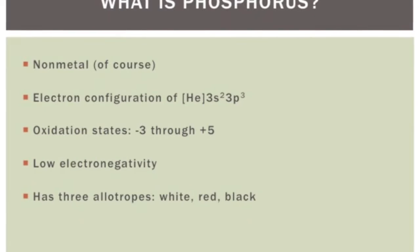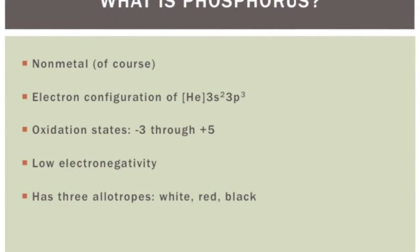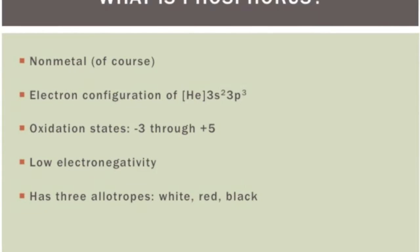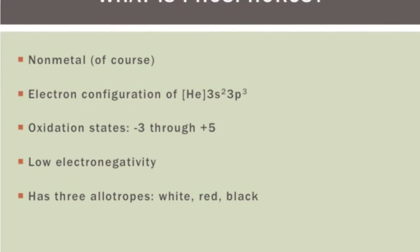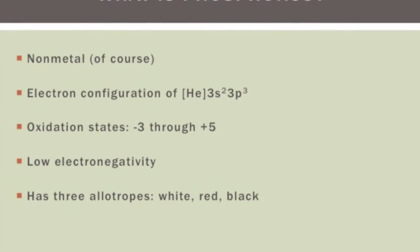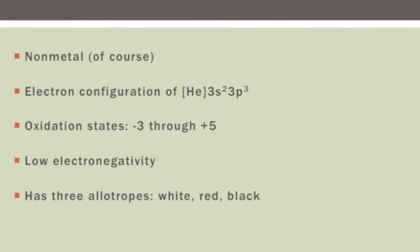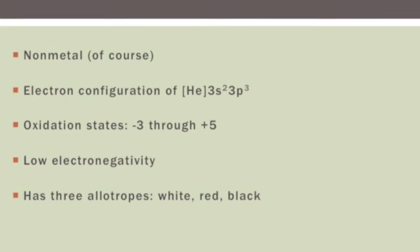What is phosphorus? Phosphorus is a non-metal with an electron configuration of helium plus 3s2 and 3p3, putting it within the same group as nitrogen. It has oxidation states ranging from negative 3 to positive 5. It also has a low electronegativity, but what it also has is three different allotropes.